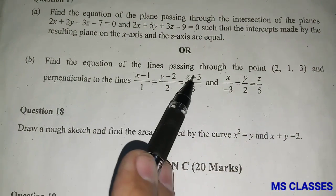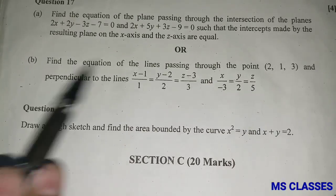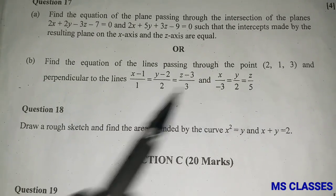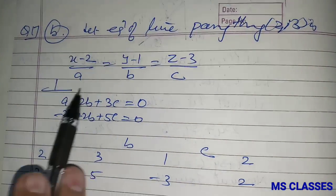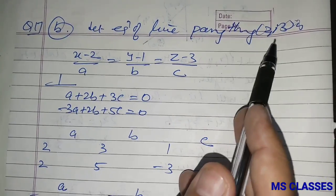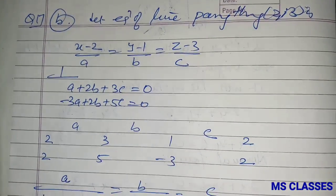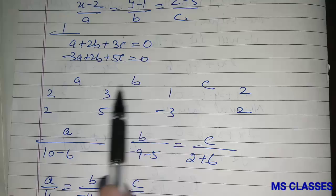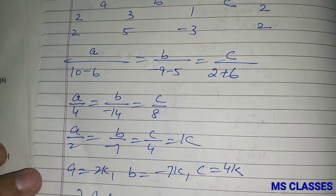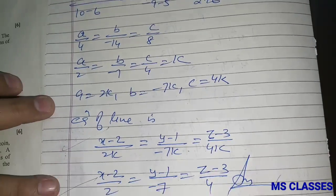Find the equation of the line passing through (2, 1, 3) and perpendicular to the two given lines. Write the line through (2, 1, 3) with direction ratios (a, b, c). Using perpendicularity conditions with both lines gives two equations, solving which determines the direction ratios and hence the equation of the required line.